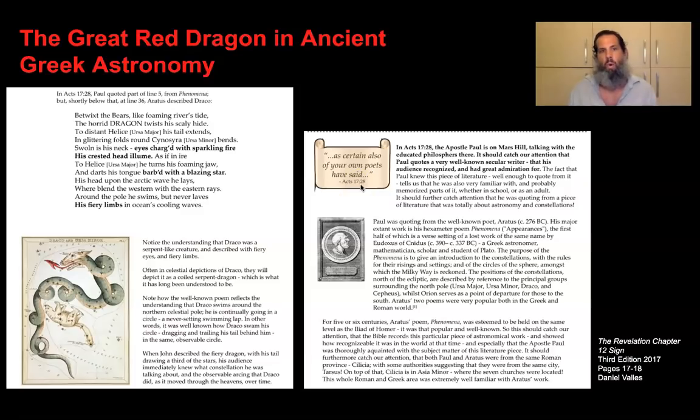In the poem, Aratus identifies the dragon, Draco, the horrid dragon twists his scaly hide. Swollen is his neck, his eyes charged with sparkling fire, his crested head illuminates, and the darts of his tongue barbed with a blazing star, his fiery limbs in the ocean's cooling waves. The red dragon constellation is Draco, and we still have that constellation today.